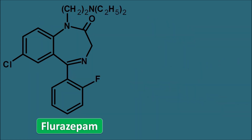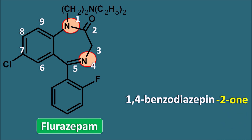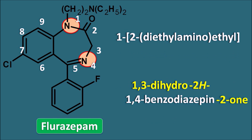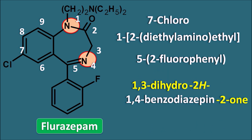Next is flurazepam. Root name: 1,4-benzodiazepine-2-one, prefixed with 1,3-dihydro and 2H. At position 1 there is a 2-(diethylamino)ethyl group — an ethyl group attached to a diethyl-substituted amine. Position 5 has a 2-fluorophenyl group and position 7 has chloro. Arranged alphabetically, the IUPAC name of flurazepam is: 7-chloro-1-(2-diethylaminoethyl)-1,3-dihydro-5-(2-fluorophenyl)-2H-1,4-benzodiazepine-2-one.